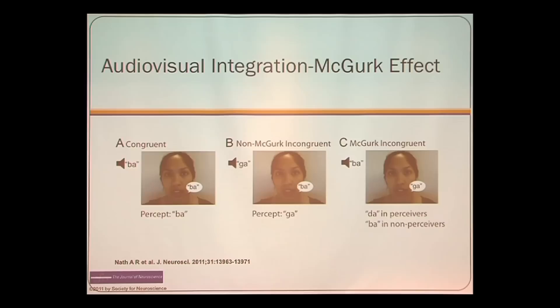Moving from basic auditory processing up the communication chain, the brain wants to combine auditory information with visual information. The classic example is the McGurk effect. It has three components: congruent — you hear 'ba' and see lips saying 'ba'; incongruent — you hear 'ga' and see 'ba,' and you perceive 'ga' because your brain won't fuse them; or a fusion percept — you hear 'ba,' you see 'ga,' and what you perceive is 'da.' Your brain does this automatically.